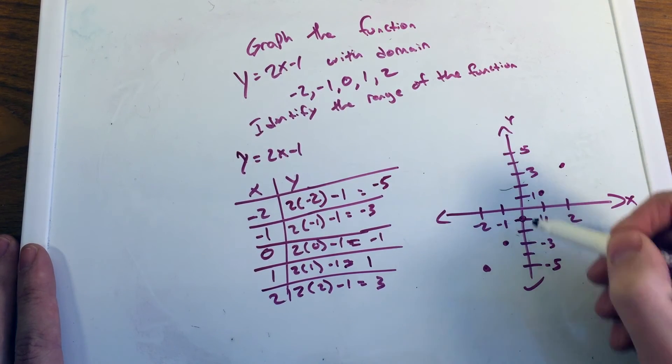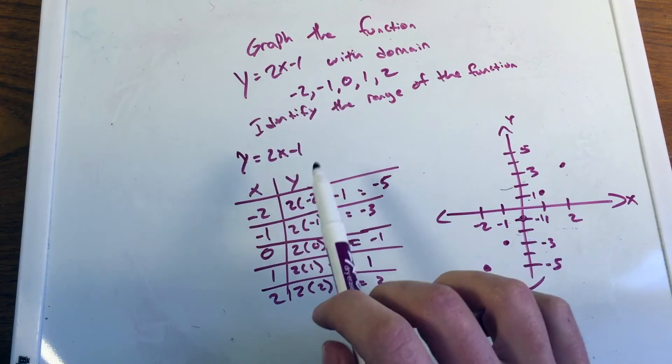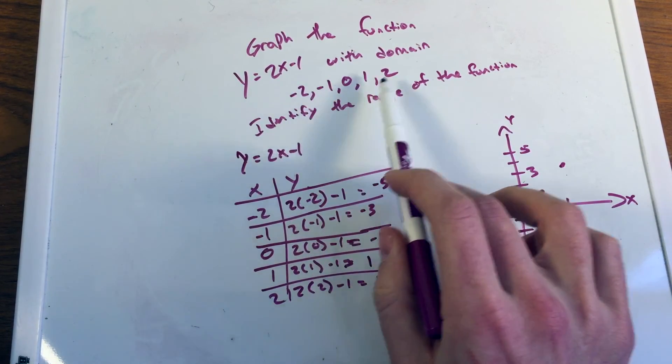And so these dots here, these 1, 2, 3, 4, 5 dots, are our function given a specific domain of negative 2, negative 1, 0, 1, and 3.